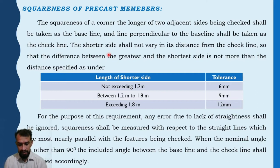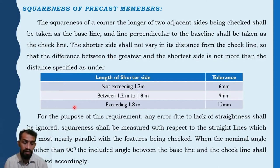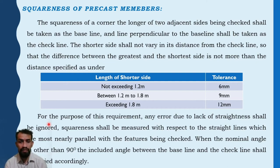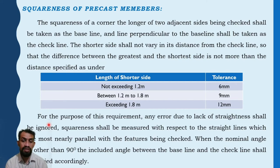Squareness is critical because joints between two members require the member to be in its intended shape. If the shape is not intact, proper joints cannot be formed. Any error due to lack of straightness shall be ignored. Squareness shall be measured with respect to straight lines most nearly parallel with the features being checked. When the nominal angle is other than 90 degrees, the included angle between the baseline and the check line shall be varied accordingly.